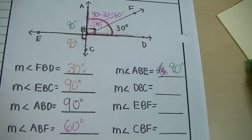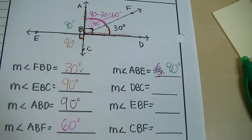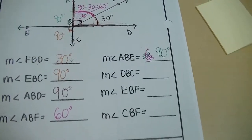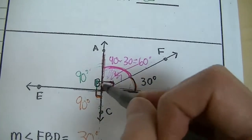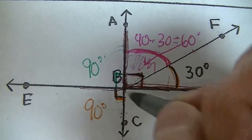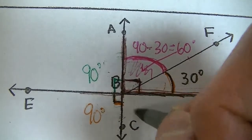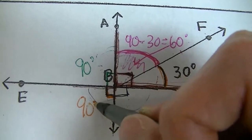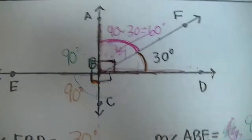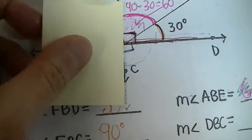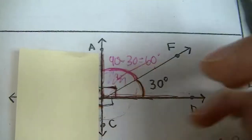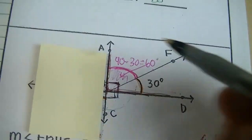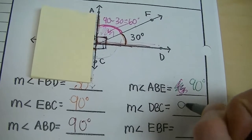Next, find the measurement of angle DBC. There are a couple of ways to figure this out. First, since ABE is 90 degrees, vertical angles are always congruent, so DBC would also be 90 degrees. Another approach: by supplementary angles, this angle and its neighbor must sum to 180, requiring DBC to be 90. Yet another approach gives the same result via supplementary angles. So angle DBC is 90 degrees.